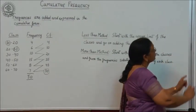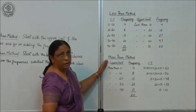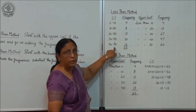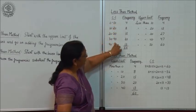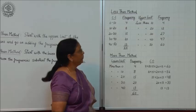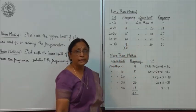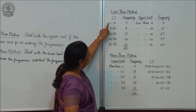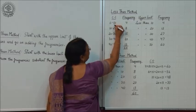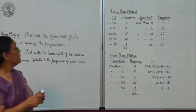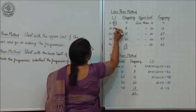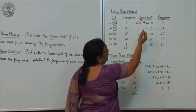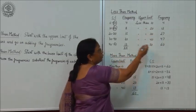This is the less than method and the second is the more than method. Suppose the class interval is 0 to 10, 10 to 20, and so on until the last one is 40 to 50, with the frequency given. The total number of frequencies is 60. When we convert this into less than, as I told you, we take the upper limits: 10 is the upper limit, 20 is the upper limit, and so on — 10, 20, 30, 40, 50 are the upper limits. So here we say less than 10, less than 20, etc.